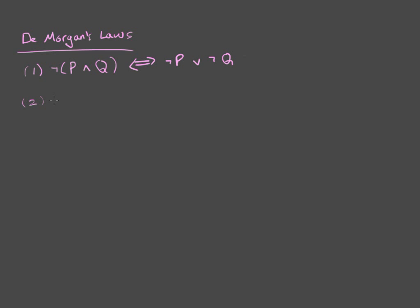And then the other one is that the negation of an OR statement does a very similar thing, becomes NOT P AND NOT Q. All right, and those are De Morgan's Laws.